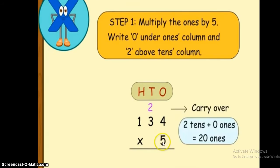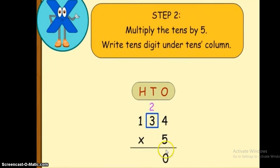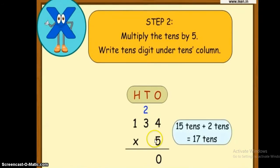Then we are going to start by multiplying five by the ones. Five times four equals 20. We will write zero under the ones and carry over two above the tens. Then we are going to multiply five by the tens. Tens here is 3, so five times three equals 15, plus two it will become 17.